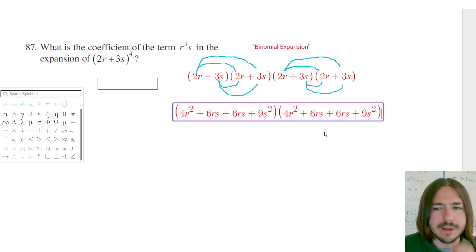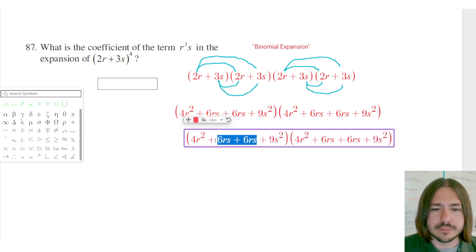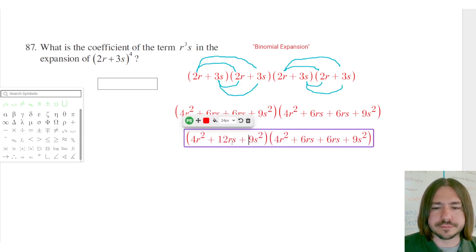So I'm just going to copy and paste that. Now, the only simplifying I can do here is to combine my like terms. The 6rs plus 6rs is going to be 12rs.